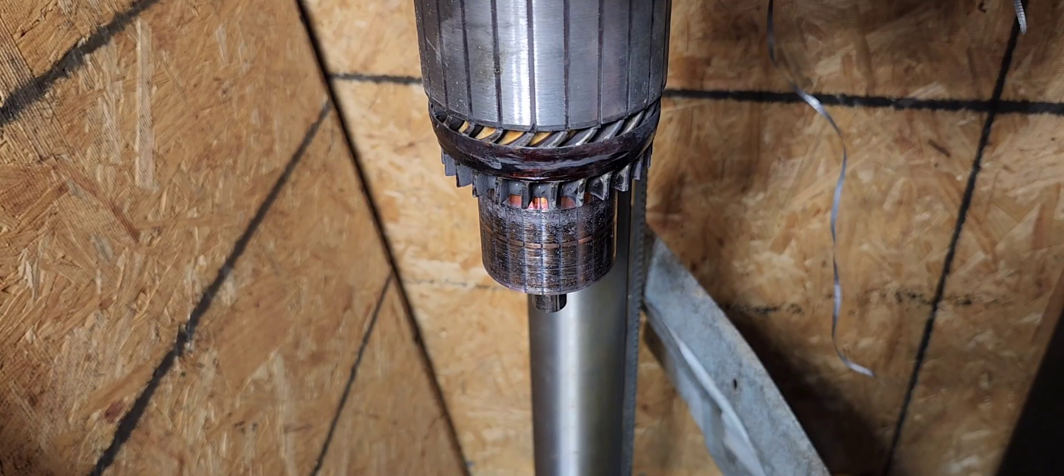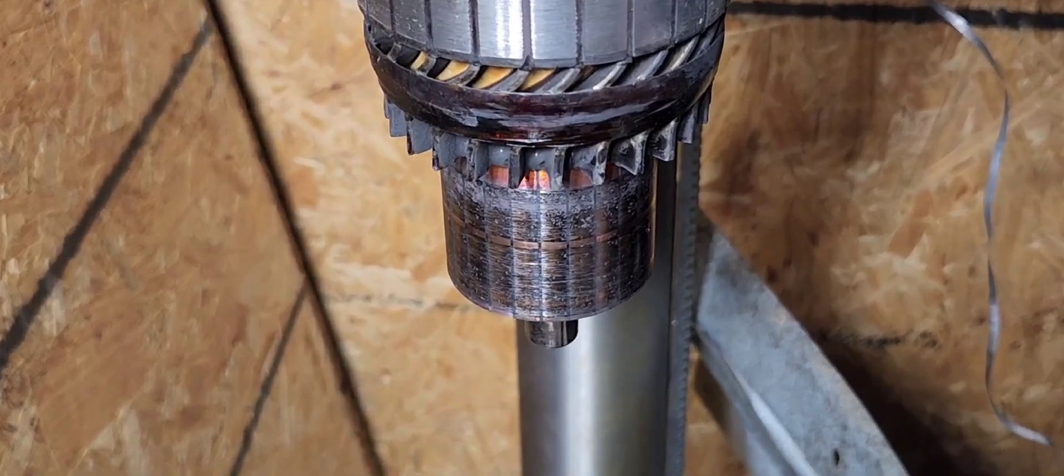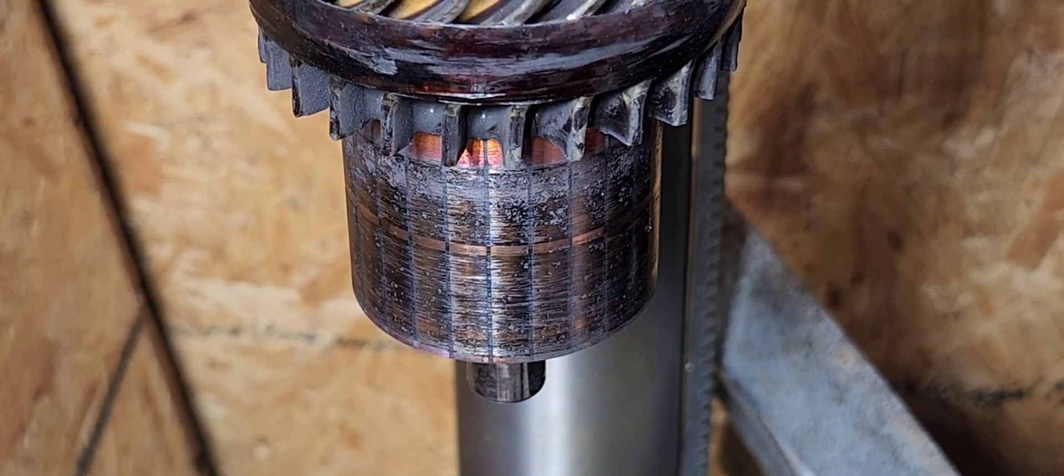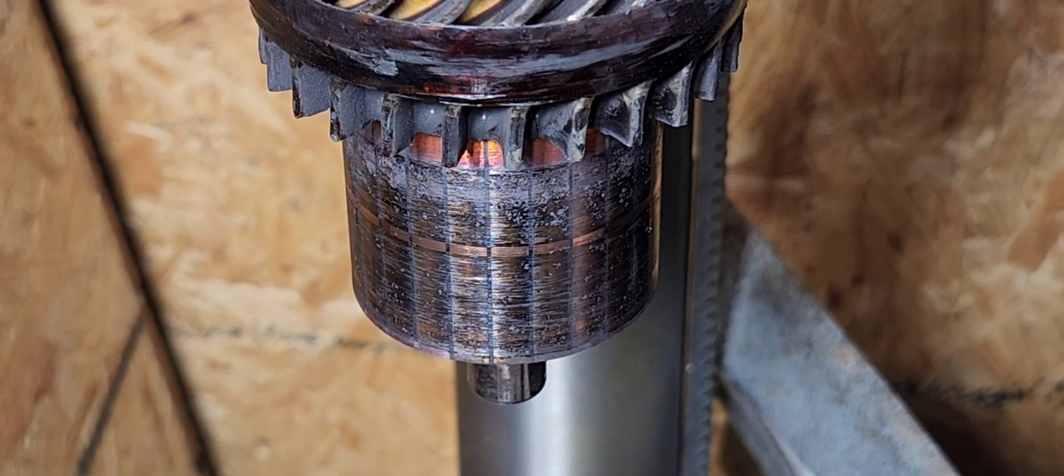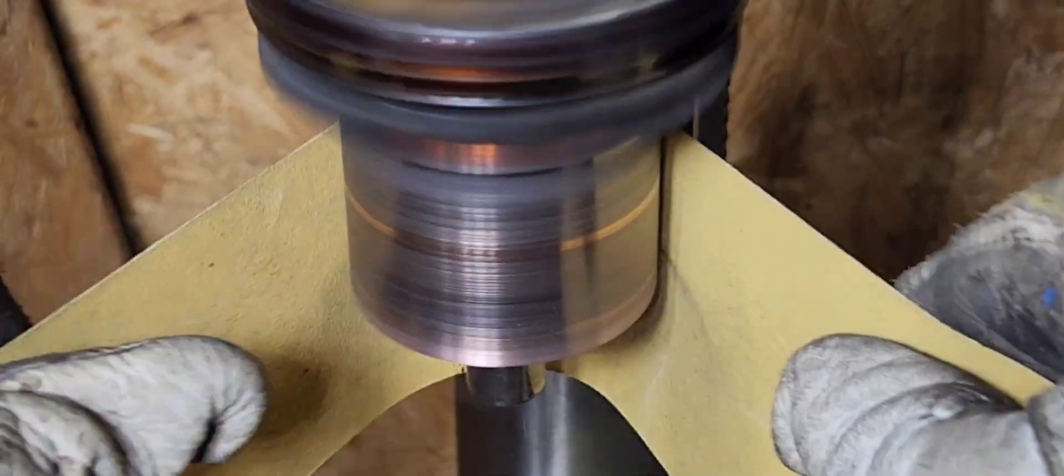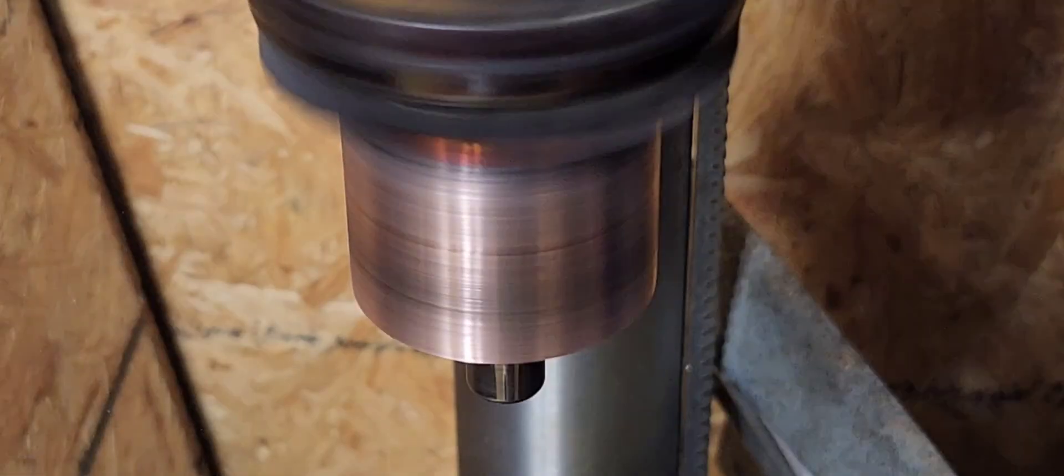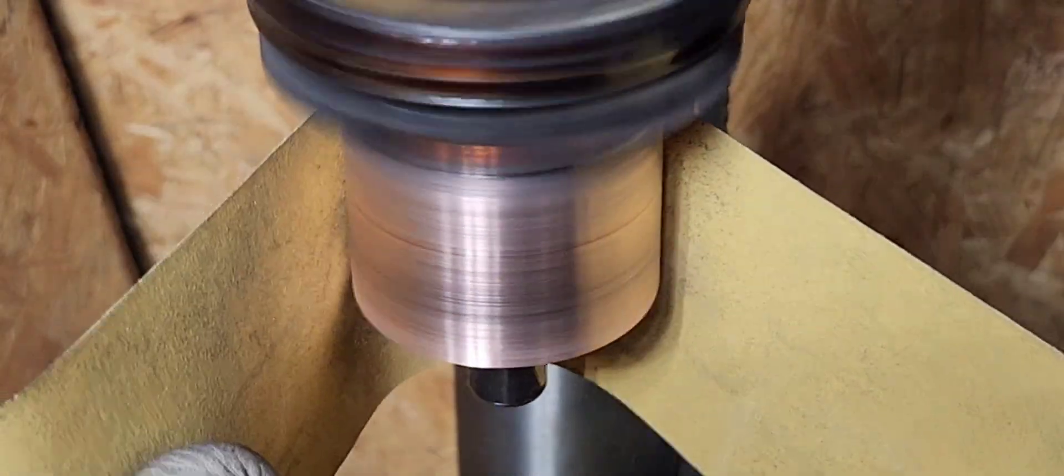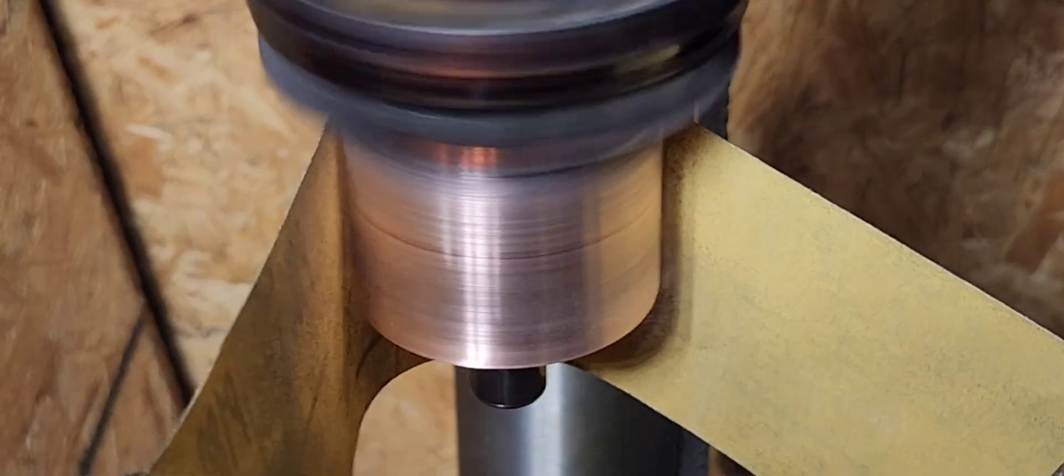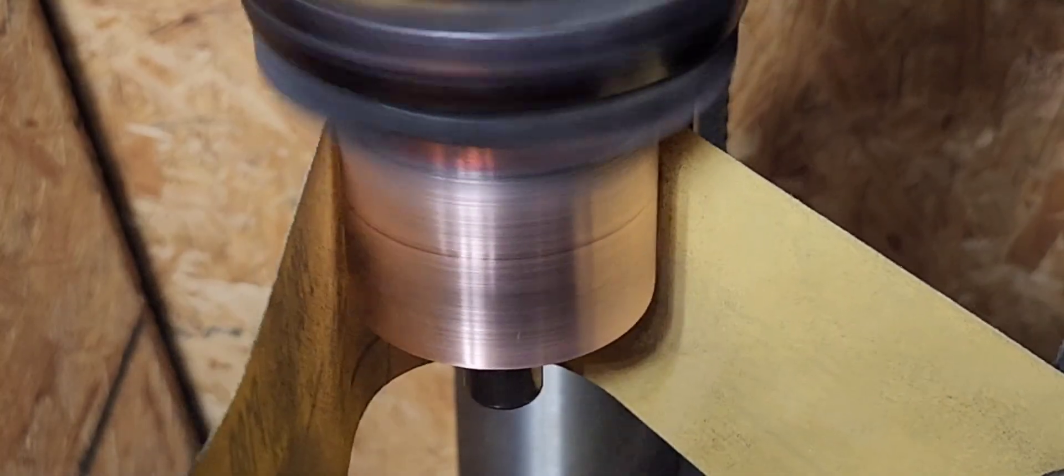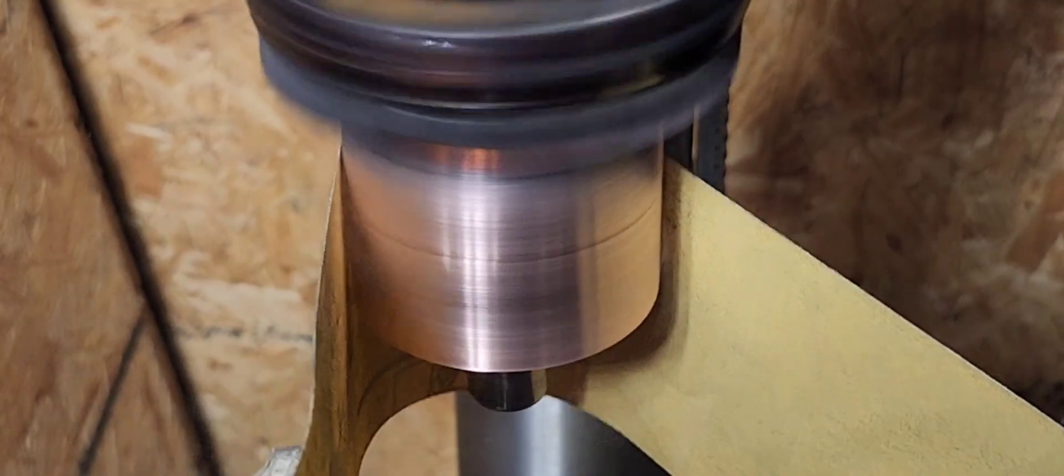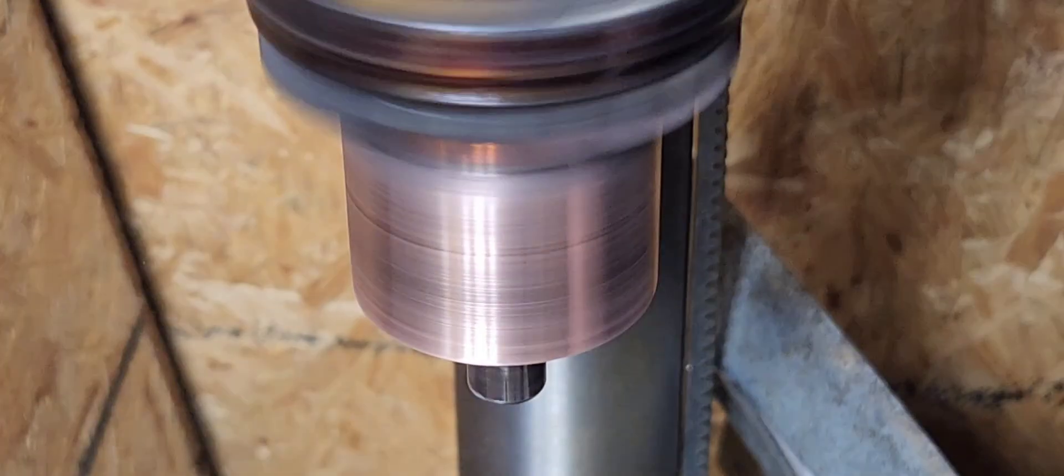Hopefully you can see that really good. I will expand this up a little bit more just so you can see the end where the commutator is. Now go ahead and turn on the drill press. I'm going to take a piece of sandpaper, go behind it, and start sanding. Flip the sandpaper over.